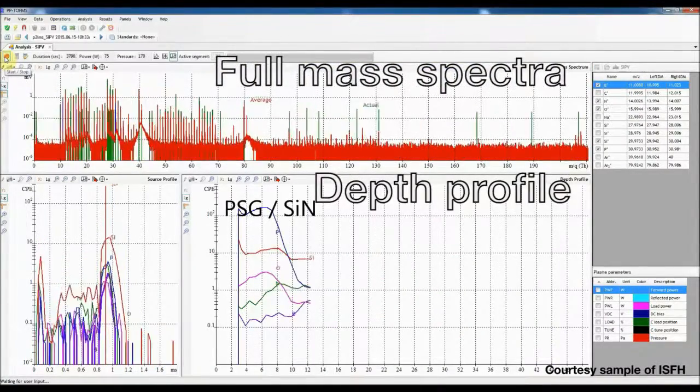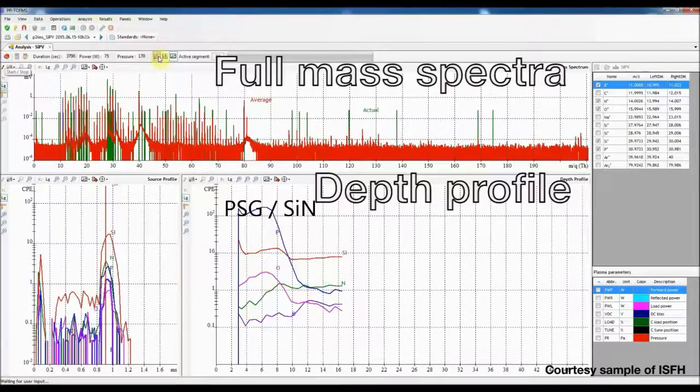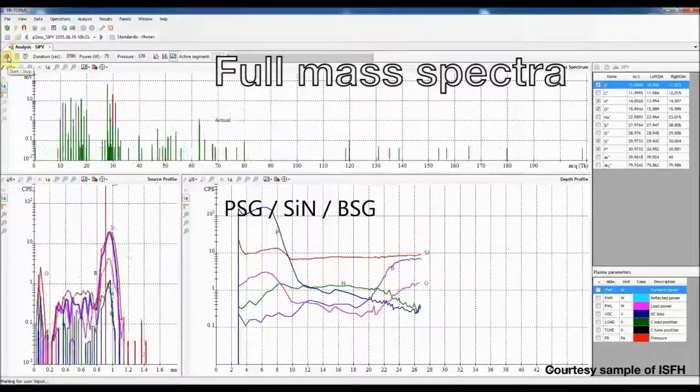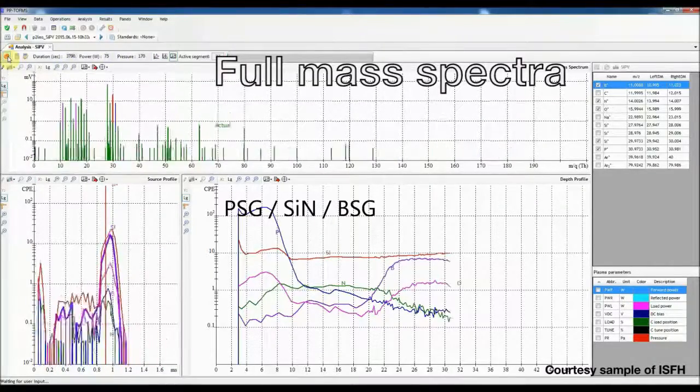You can see first a phosphorus-doped silicon oxide, followed by a silicon nitride layer, and then a boron-doped silicon oxide layer before the silicon substrate is reached.